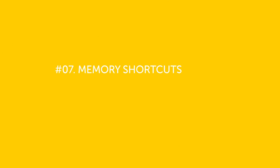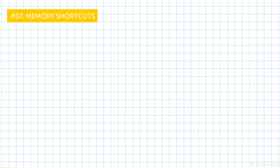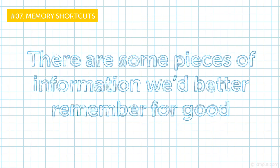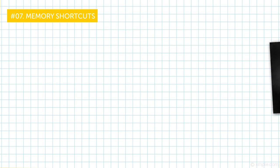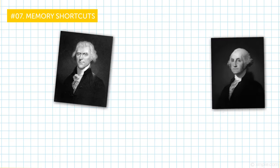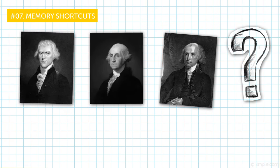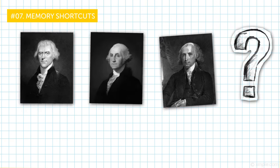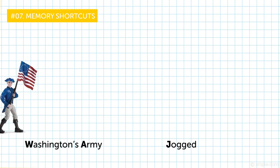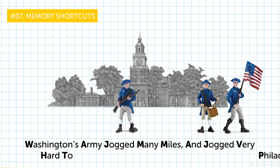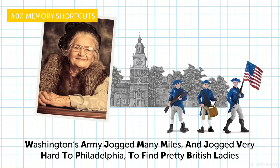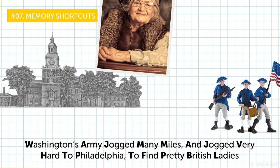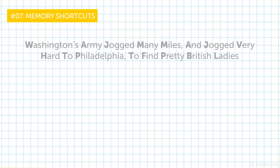Number seven. Memory shortcuts. There are some pieces of information we'd better remember for good. Important historical moments, countries, and capitals. US presidents. Can you name the first 16 of them? Washington definitely, and then it was Jefferson or Madison. I can't tell you, but I can definitely tell you that Washington's army jogged many miles and jogged very hard to Philadelphia to find pretty British ladies. Makes no sense? Oh yes, it does. Here is a list of the first American presidents by the last name.